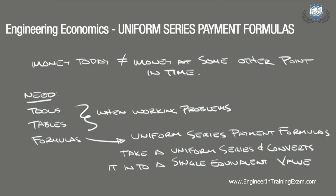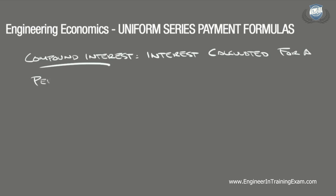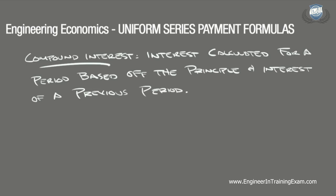A uniform series of transactions are often referred to as an annuity and denoted with an A. We are concerned with compound interest when using these formulas — the interest for a period calculated off the principal and interest from a previous period. All engineering economic analysis is based off compound interest, and for that reason, special tables with various pre-calculated conversion factors have been developed for our use.